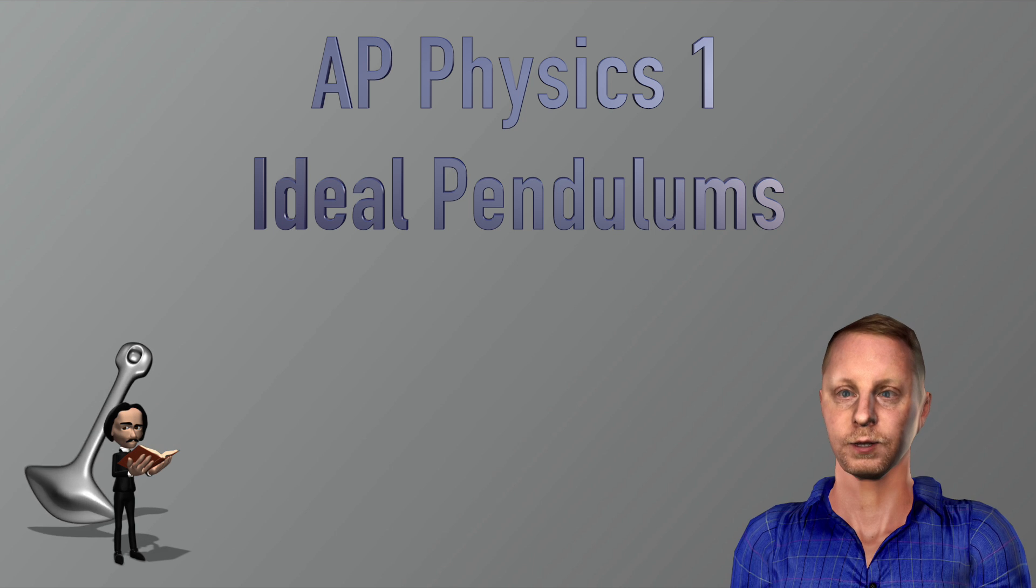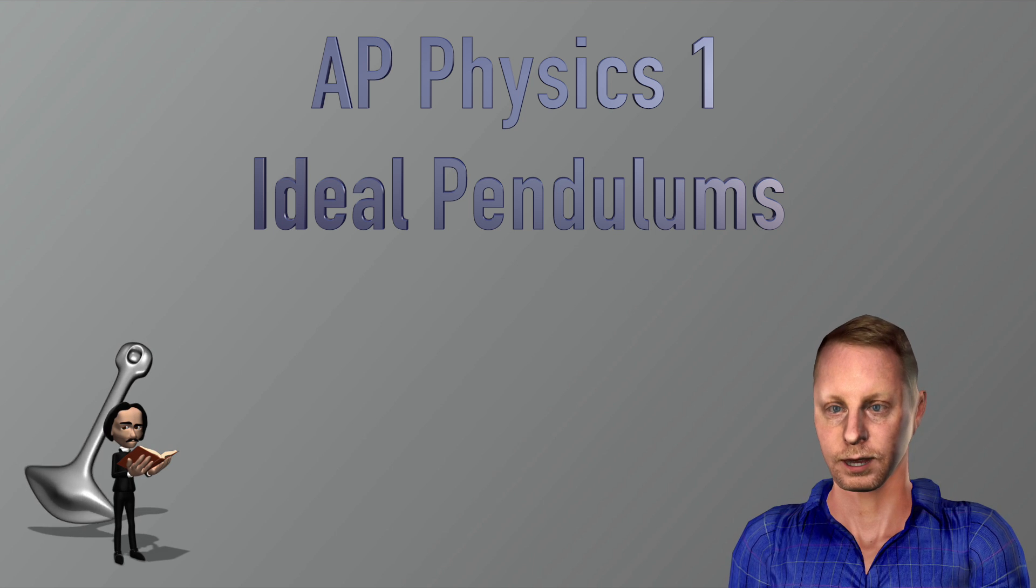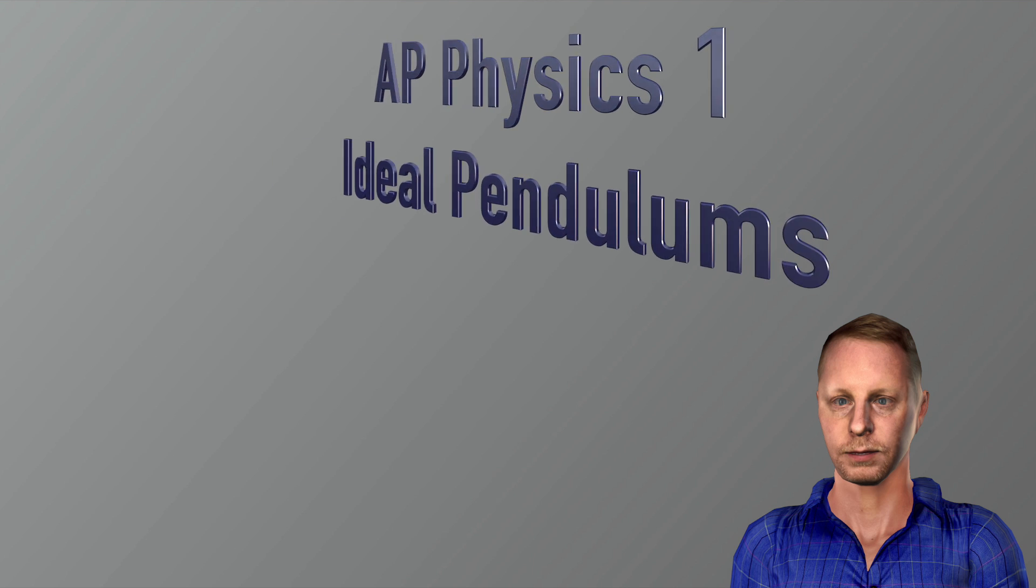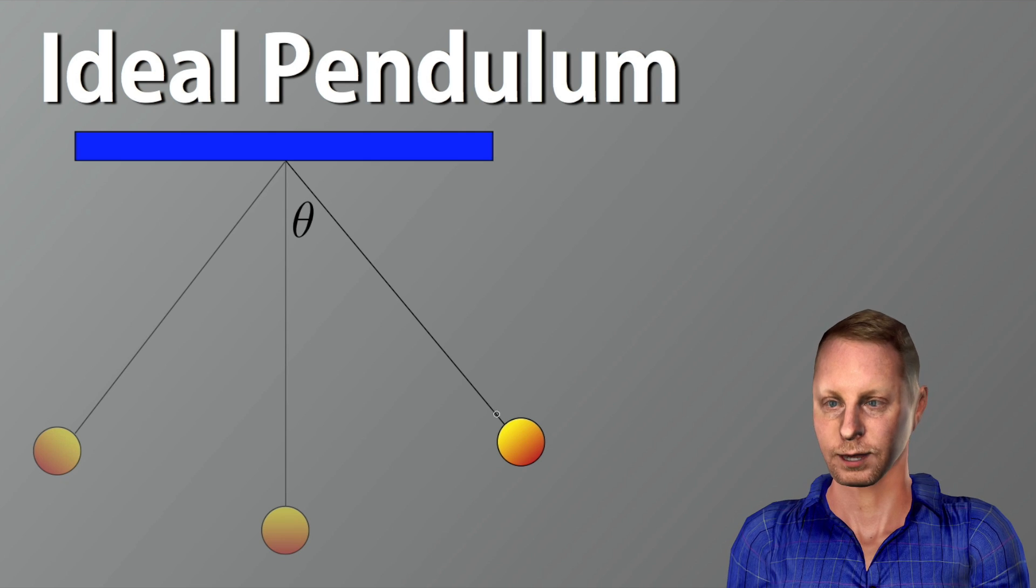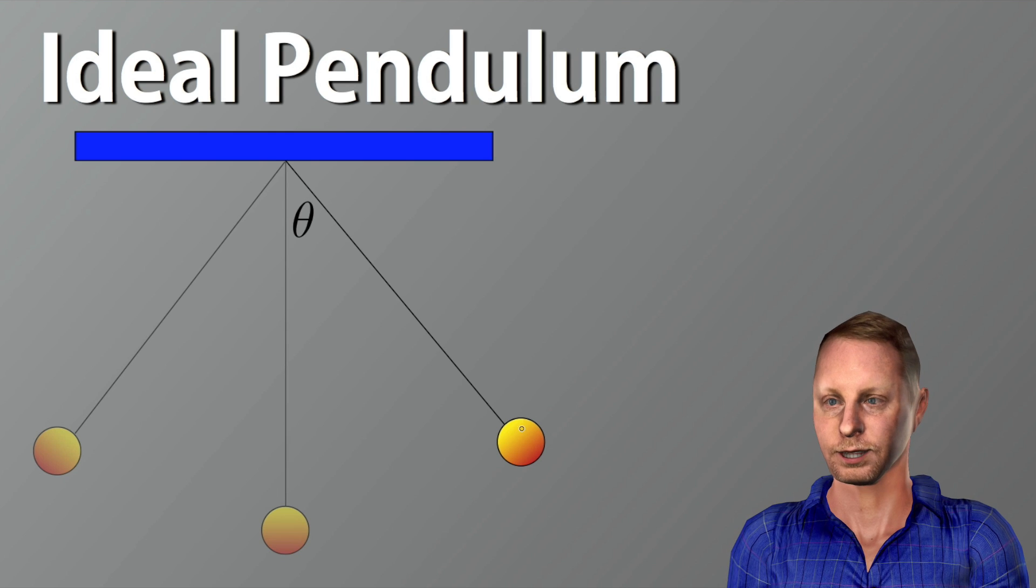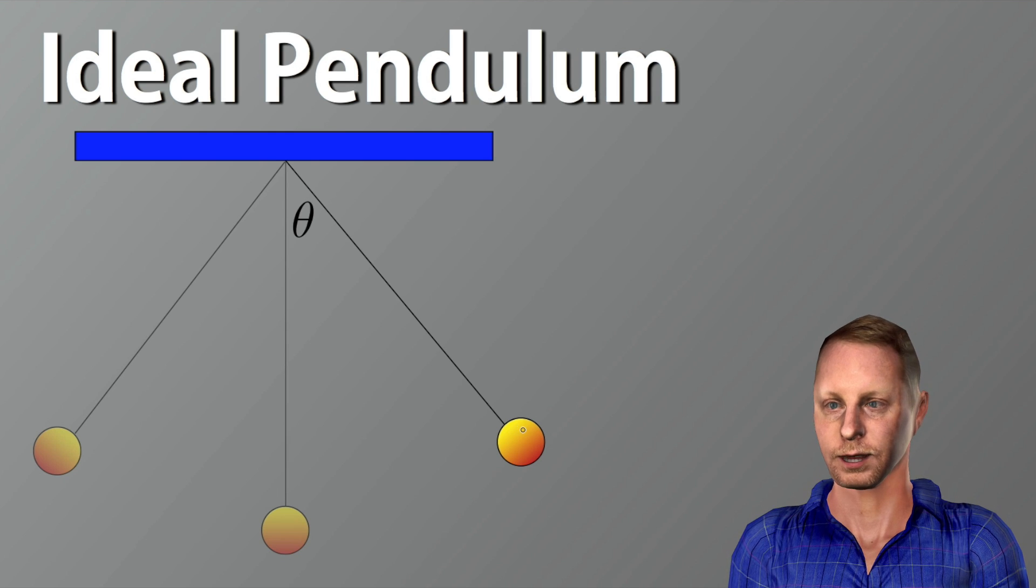Hello everyone and welcome to A Plus Physics. Today we're going to talk about the ideal pendulum. Ideal pendulums provide another demonstration vehicle for simple harmonic motion. If we consider a mass m attached to a light string that swings without friction about the vertical equilibrium position, swinging back and forth.